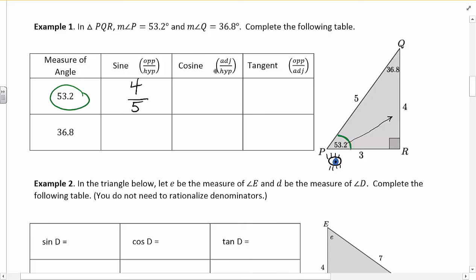Cosine, you're going to compare the adjacent to hypotenuse. So if I, again, look from 53.2, the adjacent side is the one that touches it. That's going to be 3. And the hypotenuse is what it was, which is 5. So the cosine of 53.2 equals 3/5.